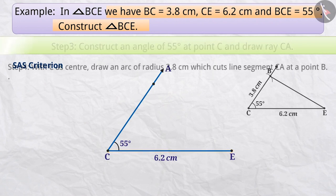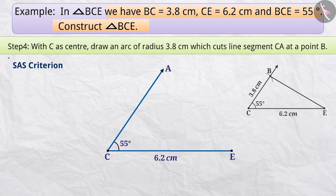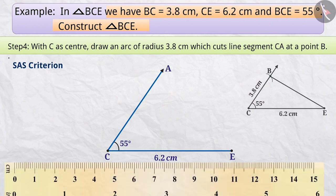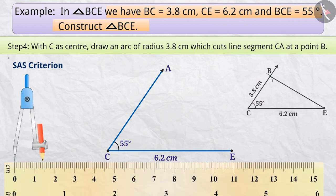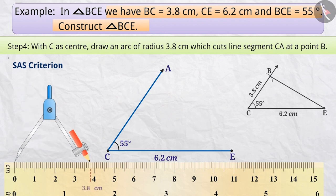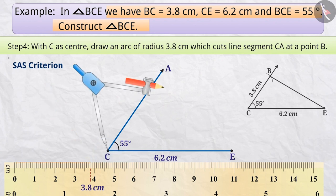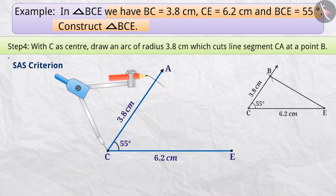Step 4: The length of BC has been given as 3.8 cm. Therefore, point B is at a distance of 3.8 cm from point C. We will open the compass with the required radius of 3.8 cm. With C as center, draw an arc of radius 3.8 cm. It cuts the line segment CA at a point B.